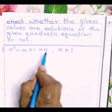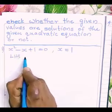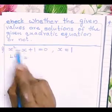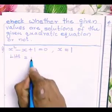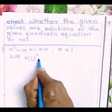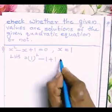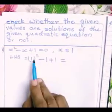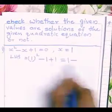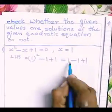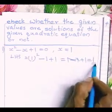Substitute in the LHS. LHS equals x² - x + 1. For x = 1, that is 1² - 1 + 1. What is 1²? It is 1. So 1 - 1 + 1: 1 - 1 is 0, plus 1, that is equal to 1.